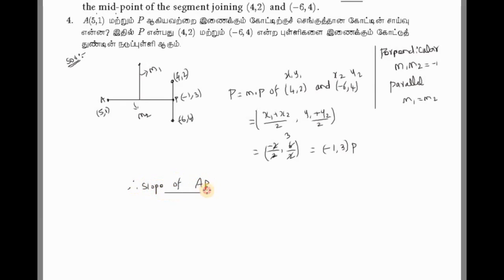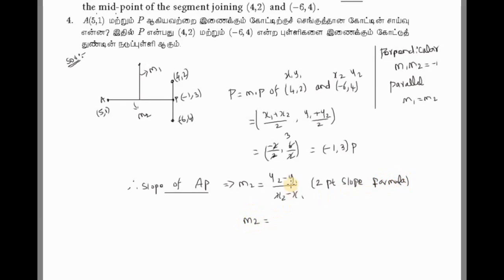Slope of AP: m2 equals y2 minus y1 divided by x2 minus x1. Using the two-point slope formula with x1, y1, x2, y2: y2 = 3, minus 1, divided by x2 minus x1, which is minus 1 minus 5. That gives 2 by minus 6, cancel to get 1 by minus 3, so m2 = minus 1 by 3.